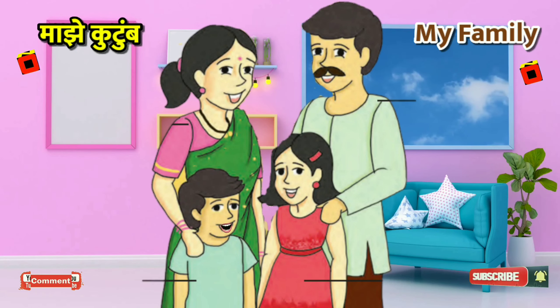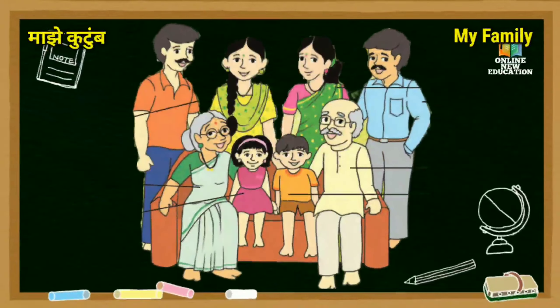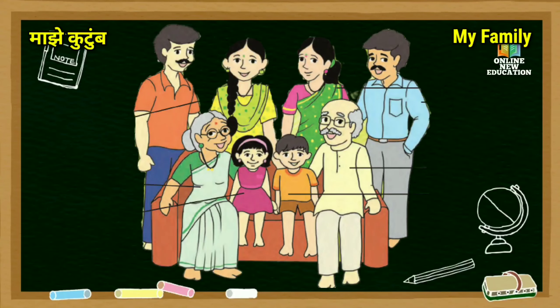आमच्या कुटुंबात फक्त चार सदस्य असल्यामुळे आमच्या कुटुंबाला लहान कुटुंब म्हणतात - Our family is called a small family as there are only four members in our family. मुलांनो, कुटुंबातील सर्व सदस्यांशी असलेले नाते संबंधींचे शब्द ऐका आणि Marathi व English भाषेतून म्हणा - Children, listen and say the words related to relationships with all family members in Marathi and English language.